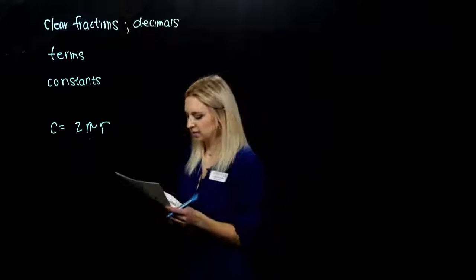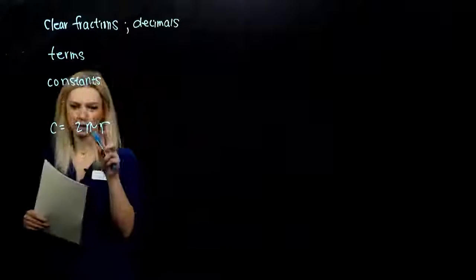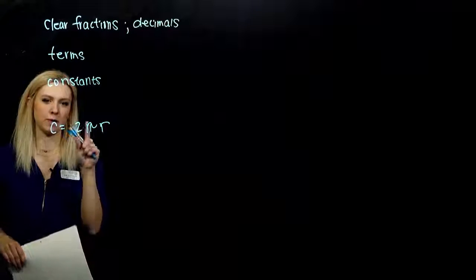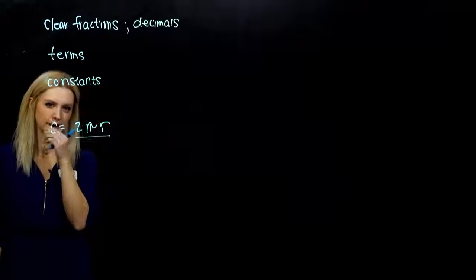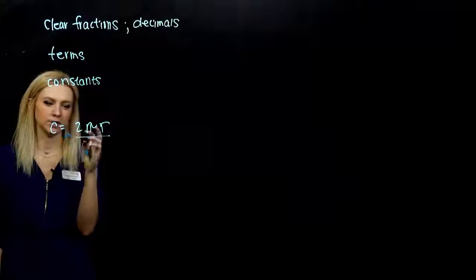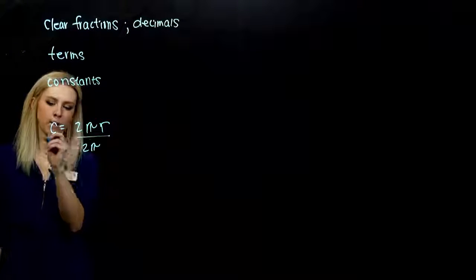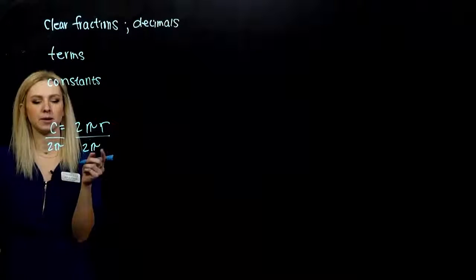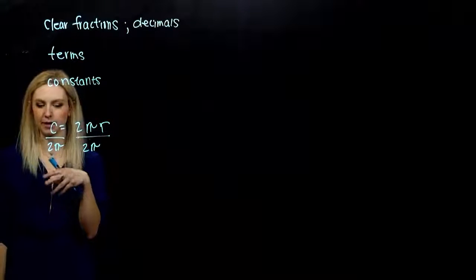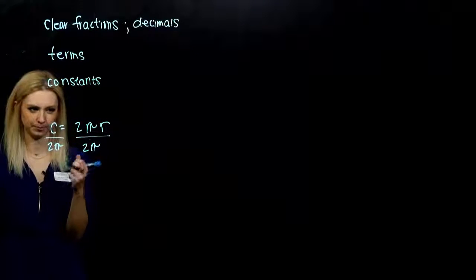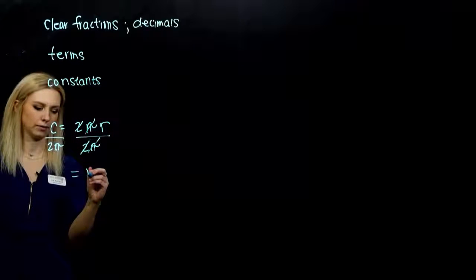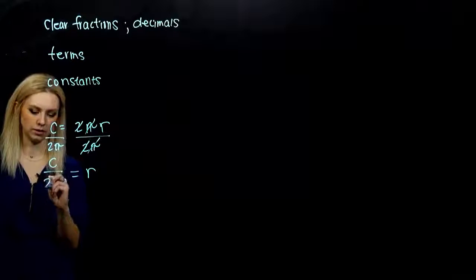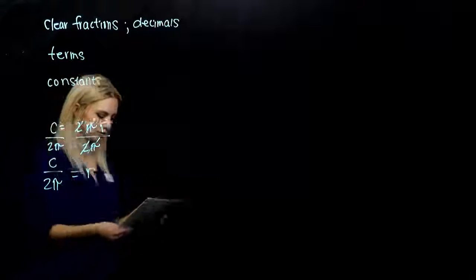So as I'm solving for r, r is being multiplied by both 2 and pi. So I need to solve for r by dividing both sides by 2π. You could do it individually—first divide by 2, then divide by pi—but the same thing is going to happen. Because same thing divided by the same thing is gone. We're left with r equals c divided by 2π.